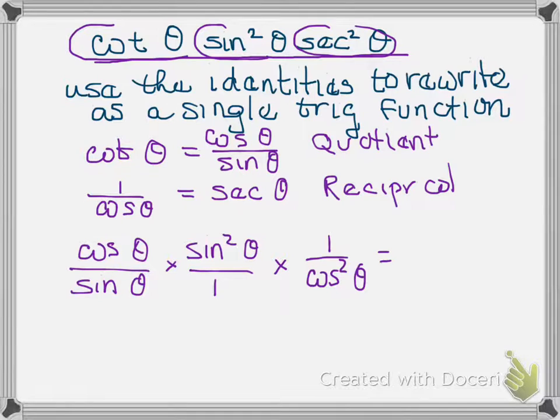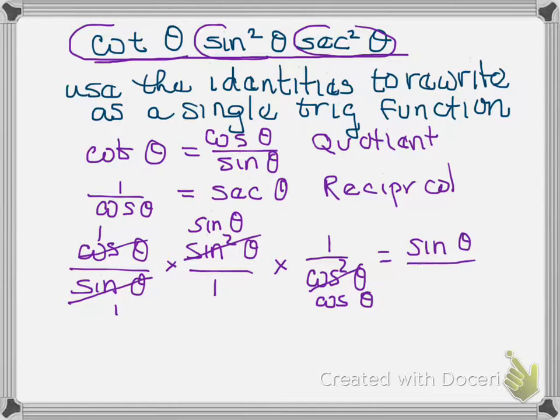Let's simplify. We notice that we have a sine and a sine squared so we can simplify that. We notice we have a cosine and a cosine squared so we can simplify. And now going across the top we have one times sine times one so we get the sine of theta and going across the bottom we have one times one times the cosine of theta.